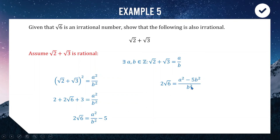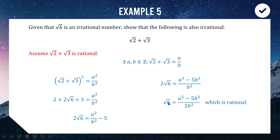Dividing both sides by 2: √6 = (a² − 5b²) / (2b²). Since a, b, 2, and 5 are all whole numbers, the top and bottom are whole numbers, meaning we've expressed √6 as a fraction of two whole numbers — showing √6 is rational. That is a contradiction to the information in the question. Therefore, our assumption was false, and √2 + √3 must be an irrational number.